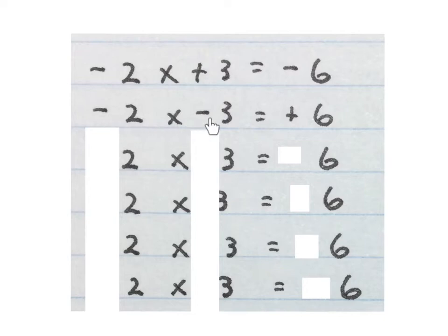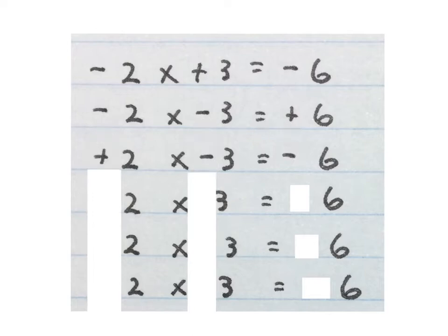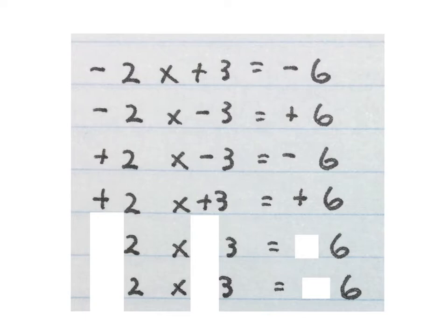Minus 2 times minus 3 will give us a plus 6. If the signs are the same the answer is positive. Plus 2 times minus 3 will give us a minus 6 — the signs are different so the answer is a minus. Plus 2 times plus 3 is plus 6 because the signs are the same.